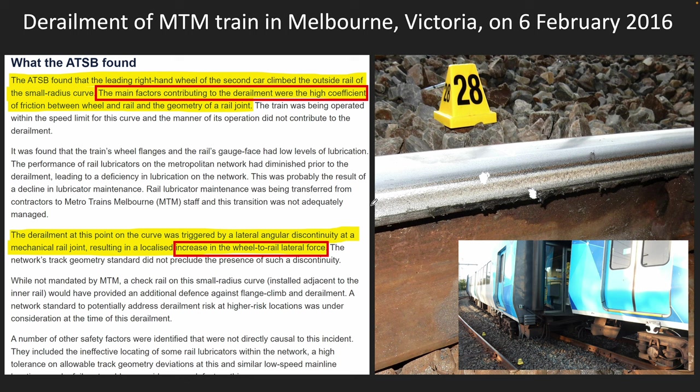Going back to that derailment in Australia, you can also see that the ATSB found the main factors contributing to the derailment were the high coefficient of friction between the wheel and rail. So clearly, coefficient of friction matters a lot.